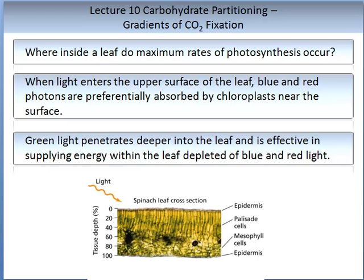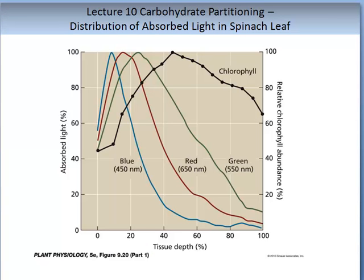Where inside a leaf do the maximum rates of photosynthesis occur? Light enters the upper surface of the leaf. Blue and red photons are preferentially absorbed by chloroplasts near the surface, while green photons penetrate deeper into the leaf and are effective in supplying energy within the leaf where it is depleted of blue and red light. The figure on the screen describes the efficiency of light absorption at different wavelengths, providing evidence that different wavelengths are absorbed at different depths in the plant tissue.